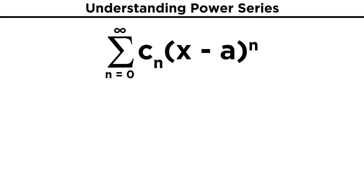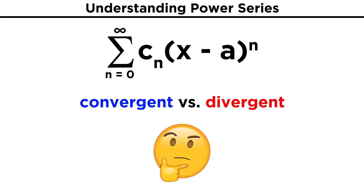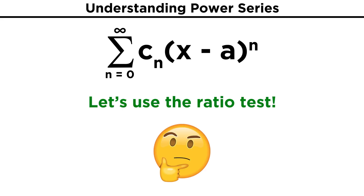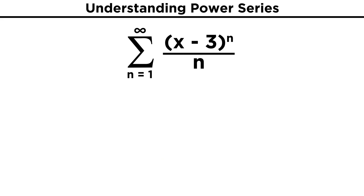We may also see power series in a form where the binomial x minus a is being raised to the n power. To assess whether this kind of power series is convergent or divergent, sometimes we will use the ratio test. Take something like the quantity raised to the n power over n.